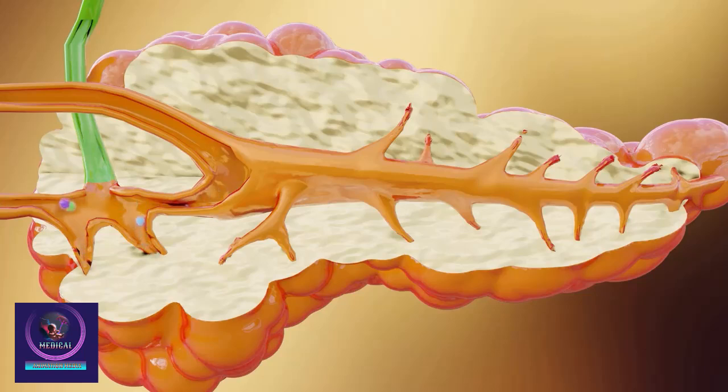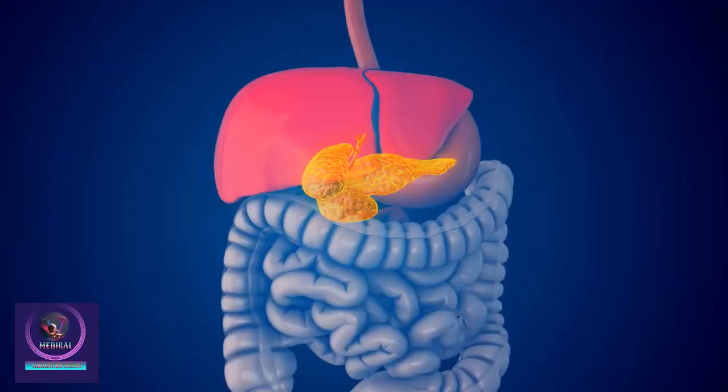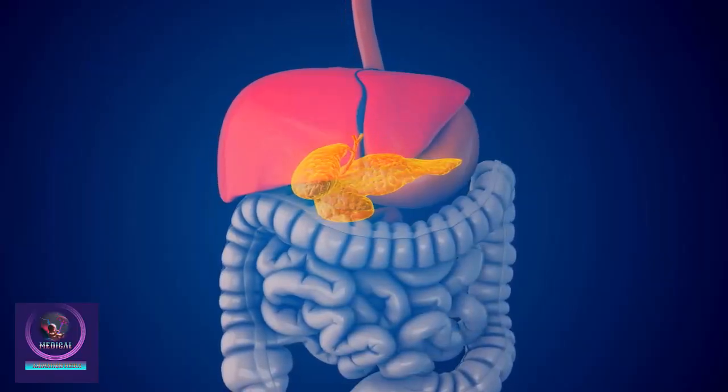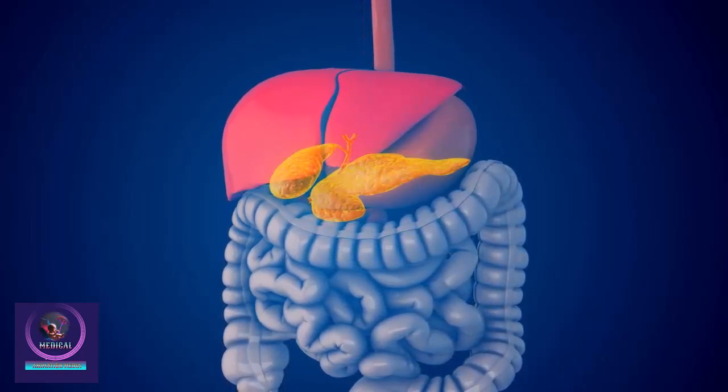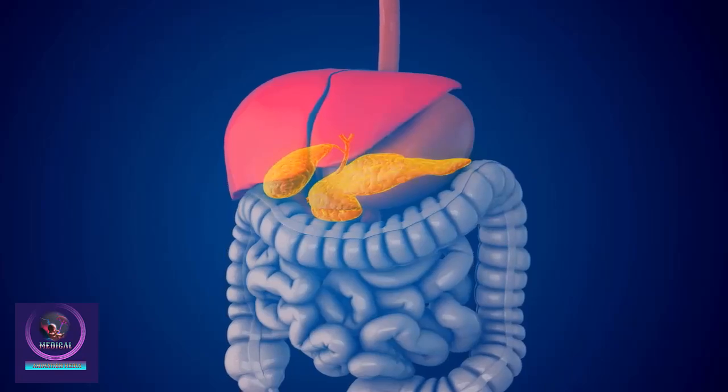The other important job of the pancreas is to make hormones, including one called insulin. Specialized cells in the pancreas called beta cells make insulin and release it into your bloodstream, shown here as a key icon.